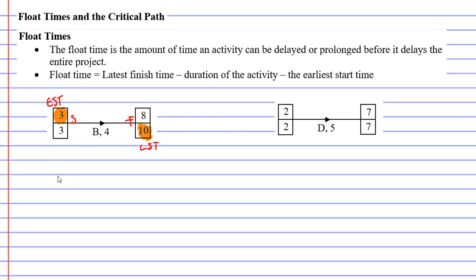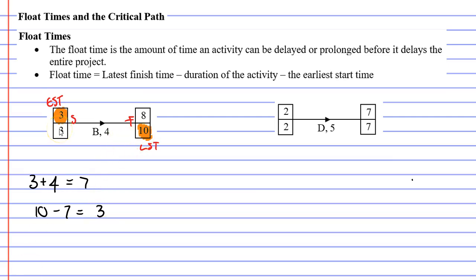Let's make some calculations. We know the plumber can't start until at least three hours into the project, and it takes four hours to complete the job, so three plus four gives us seven. It's quite possible for the plumber to start and finish their job within seven hours from the start of the project. The plumber could finish as late as 10 hours in, so 10 minus seven gives us three. The plumber could actually finish the job three hours before they need to — this is the plumber's float time.